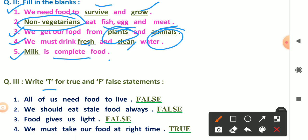Now true or false, that is sahih aur galat. Number one: all of us need food to leave. We all need food to live. Leave means to stay. We don't need food to leave, we need a home. So it is false. Number two: we should eat stale food. Stale means baasi. Should we eat stale food? It is false.